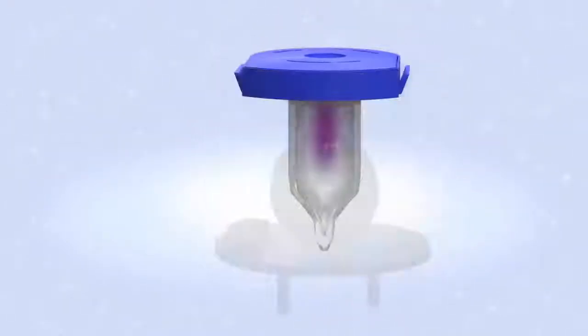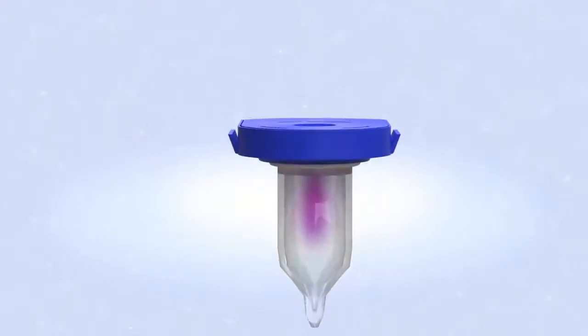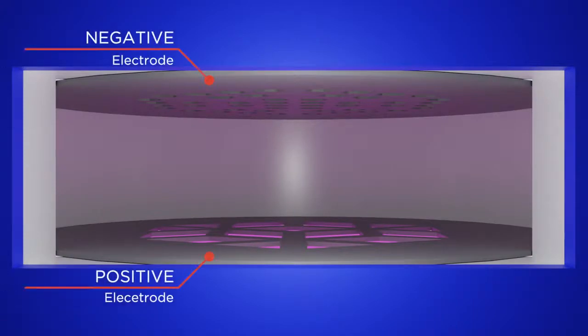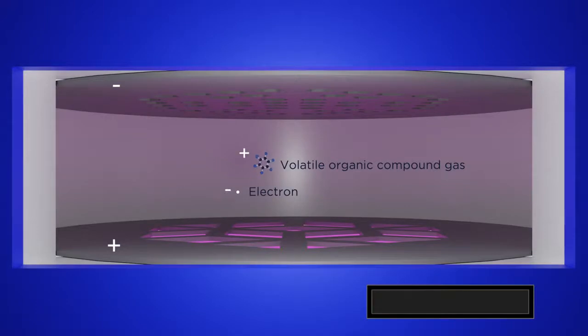Typical photoionization sensors consist of a high-energy ultraviolet lamp and two electrodes. Volatile organic compound gases enter the detection chamber and are ionized by the ultraviolet light. A negatively charged electron is ejected from the molecule, making it positively charged.